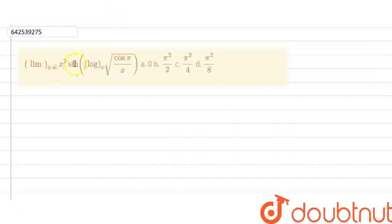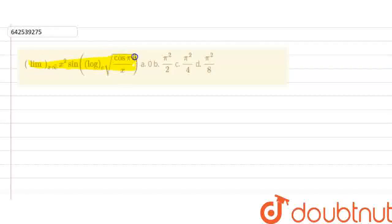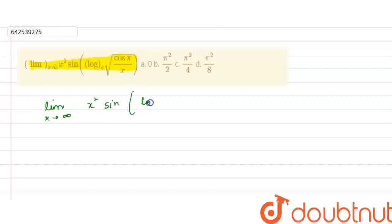The problem is: limit as x tends to infinity of x squared times sine of log base e of the square root of cosine of pi by x. We have to find the value of this expression as x tends to infinity.